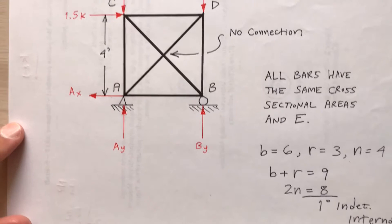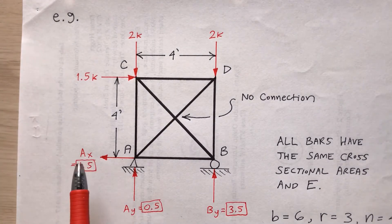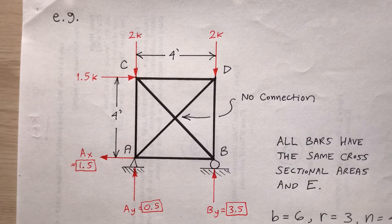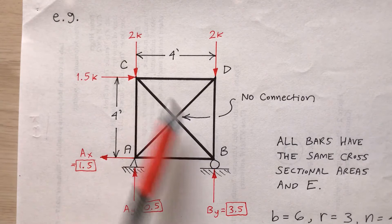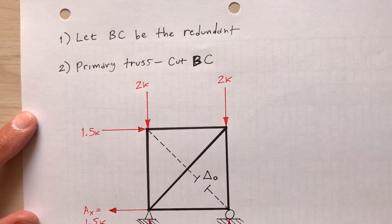So I want to find the reactions and the bar forces. Now the external reactions, I can find those very easily. Just like that, I find A sub X, A sub Y, and B sub Y. So step one, using the flexibility method, choose a redundant bar. So I'll let BC be the redundant. So I'm going to cut bar BC, and then evaluate what the internal bar forces are if I were to remove that redundant.